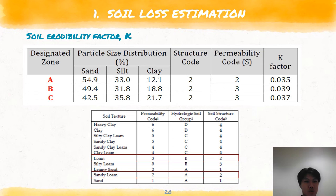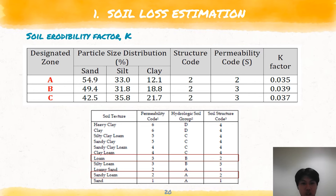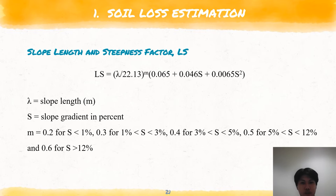The soil erodibility factor K defines the resistance of the soil to bulk detachment and transport. This factor represents the effect of soil properties and profile characteristics such as soil texture, aggregate stability, shear strength, infiltration capacity, and organic and chemical contents. The K factor for each designated zone is given and we use these values in calculations. The structure code and permeability code are also given so we can identify the soil type. The rate of soil erosion by water is very much affected by both slope length and slope steepness. The LS factor reflects the influence of slope gradient on erosion and is the ratio of soil loss from the field slope to that from a 9% slope under otherwise identical conditions. We calculate LS for the existing condition, uncontrolled during construction, and controlled during construction after BMPs have been implemented.